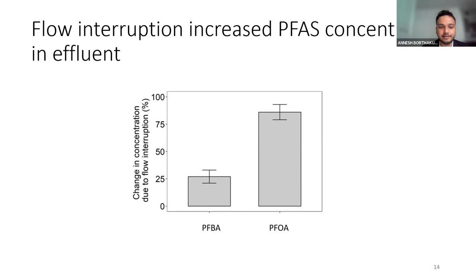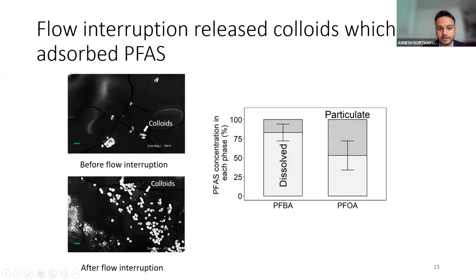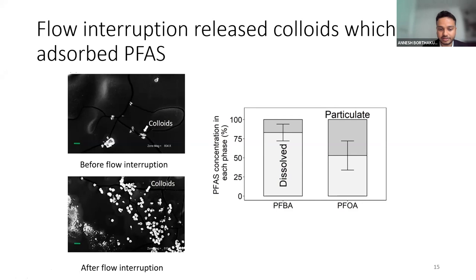We were confused about why this happened, so we decided to observe the water samples under electron microscopy. I dried the water samples in a vacuum oven and observed effluent samples both before and after flow interruptions under a scanning electron microscope. After the flow interruption, there were a lot of colloids in the liquid sample. When I removed the colloids, the PFAS concentration actually dropped down. This drop was higher for PFOA than PFBA, showing that the colloids had absorbed PFAS, and since PFOA has a higher affinity for absorption, its particle-associated concentration was higher. This confirmed that flow interruption was releasing colloids into the pore water, and these colloids increased the PFAS concentration.